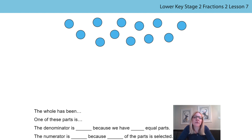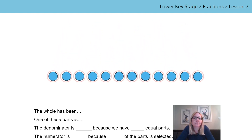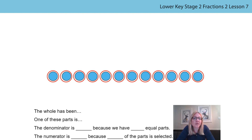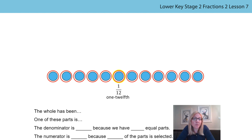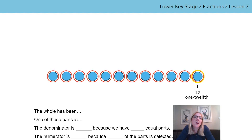What could be my next number of groups? Well done if you said twelve. The whole has been divided into twelve equal parts. One of these parts is one twelfth of the whole. This is a twelfth, this is a twelfth, and this is a twelfth. In fact, each one of these parts represents one twelfth of the whole. The denominator is twelve because we have twelve equal parts and the numerator is one because one of the parts is selected.